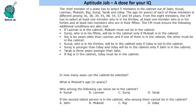Hello everyone, welcome to Aptitude Lab. This is a set based on team selection. There are 8 ministers and the chief minister has to select 5 ministers for his cabinet. The age of these ministers is given, and certain conditions are specified: we have to select at least one minister in his 30s, at least one in his 40s, and at least 2 in his 50s.